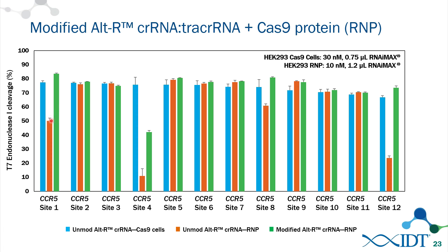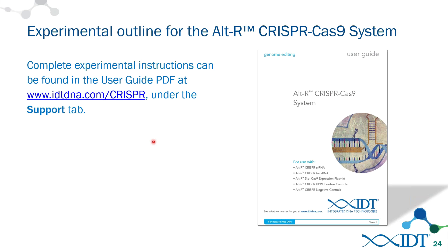Using the modified ALTAR RNAs, editing efficiency returned to normal levels across sites. While one site still did not perform as well, there was a definite increase. Following the recommendation of testing three CRISPR RNAs per target gene ensures that at least a couple will work well. For specific experimental details — amounts of lipid, protein, etc. — please refer to the user manual available on our website.